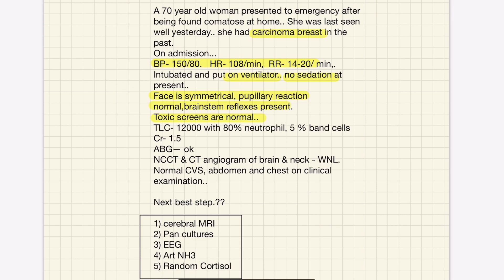Neurological examination - what can be done is normal. Toxic screen is normal. TLC is a little bit high with 80% neutrophils and 5% band cells. ABG is okay, creatinine is 1.5. Non-contrast CT and CT angio brain and neck - they are normal. What is the next best step?